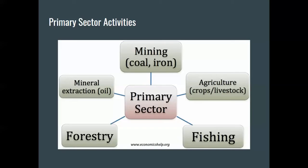When we talk about the primary sector, what we're really talking about is anything that essentially takes or extracts — and even agriculture fits this, since we plant things and then harvest them. So the primary sector is the harvesting, gathering, and extracting of things. We also want to think about this in terms of value added. This is the raw material sector — a cow, as opposed to eating a prime rib at a restaurant. We're talking about the raw material here.